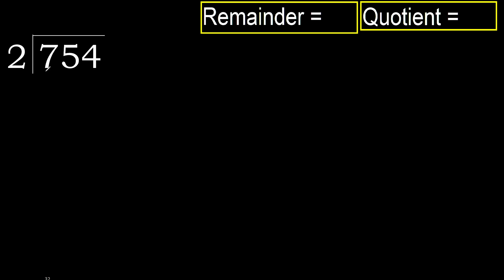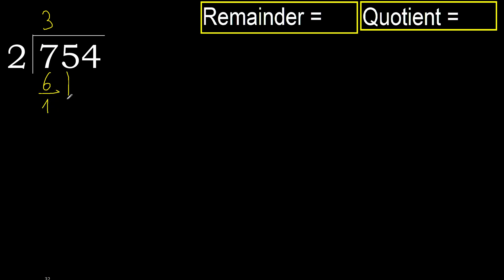754 divided by 2. 7 is not less, therefore start with 7. 2 multiplied by which number is nearest to 7 but not greater? 2 multiplied by 4 is 8 — 8 is greater. Multiply by 3: 6 is not greater. Subtract: 7 minus 6 is 1. Next,